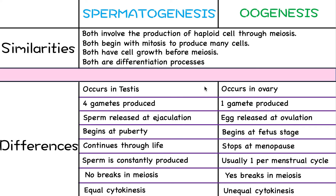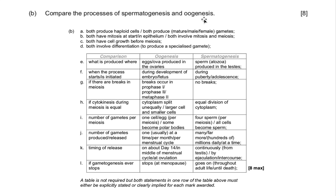To summarize: both involve production of haploid cells, both begin with mitosis, both have cell growth, and both are differentiation processes. This table is all you need to know for the IB. Here's an actual IB question: 'Compare the processes of spermatogenesis and oogenesis — 8 marks.' The mark scheme lists twelve options for similarities and differences, and you only need eight of them. So if you can remember the majority, that's full marks. I hope this video helped — good luck!